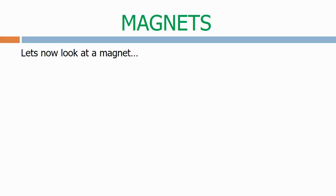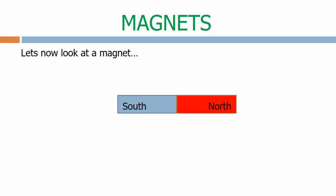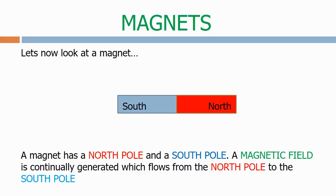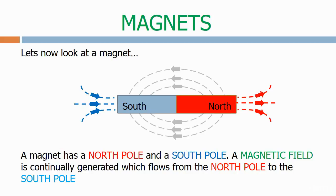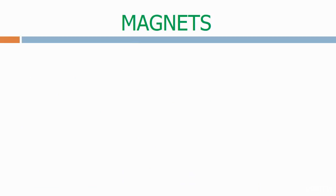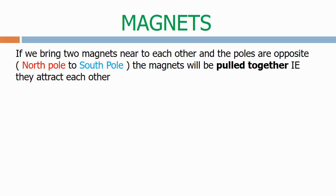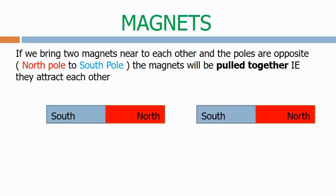Let's now look at a magnet. A magnet has a north pole and a south pole. A magnetic field is continually generated which flows from the north pole to the south pole. If we bring two magnets near to each other and the poles are opposite, i.e. north pole to south pole, the magnets will be pulled together, i.e. they attract each other.